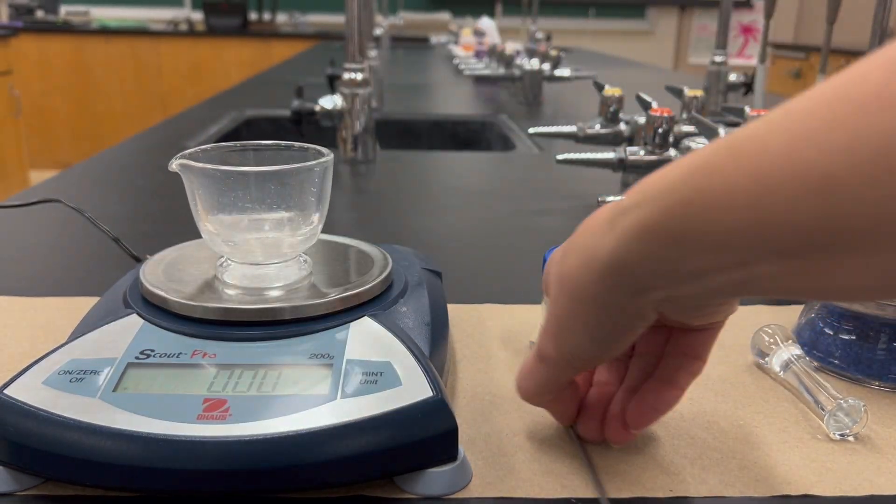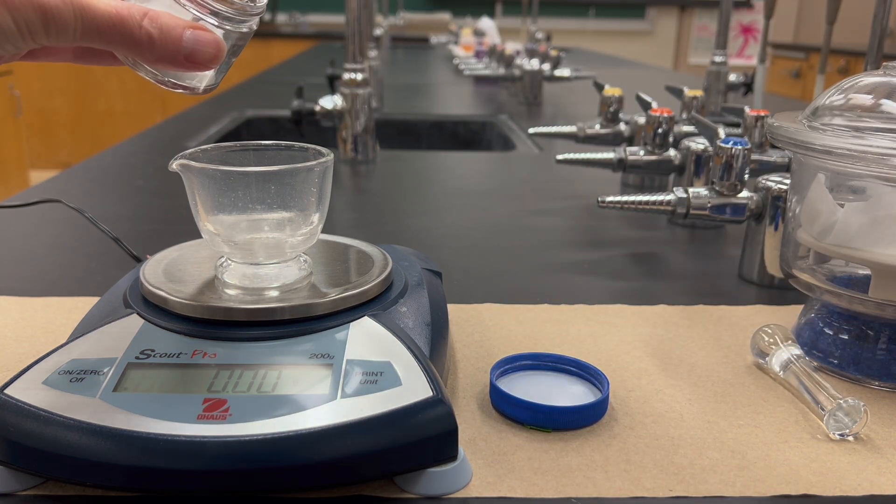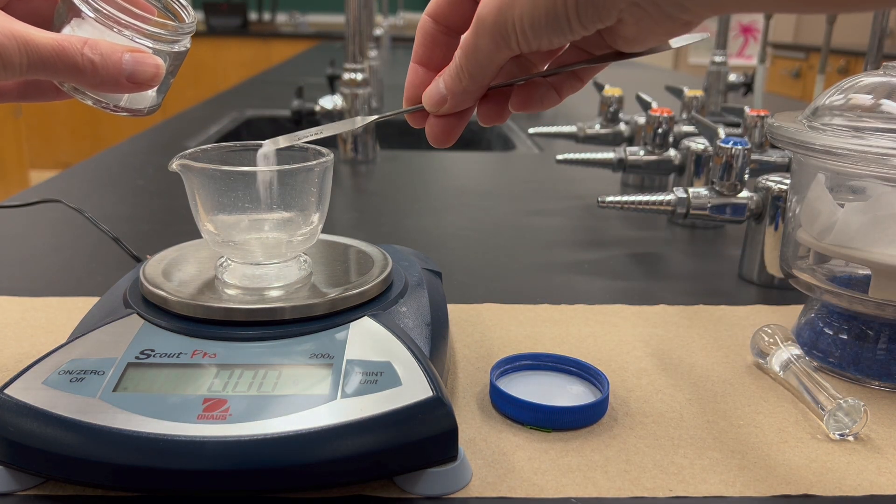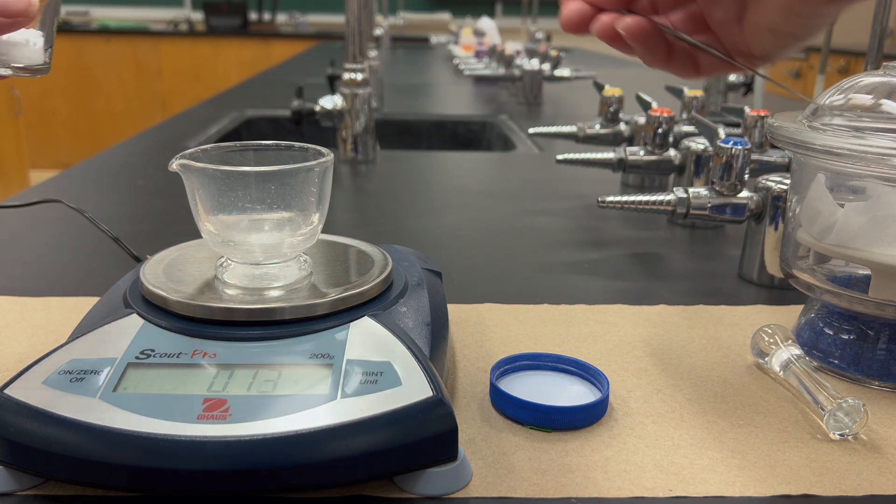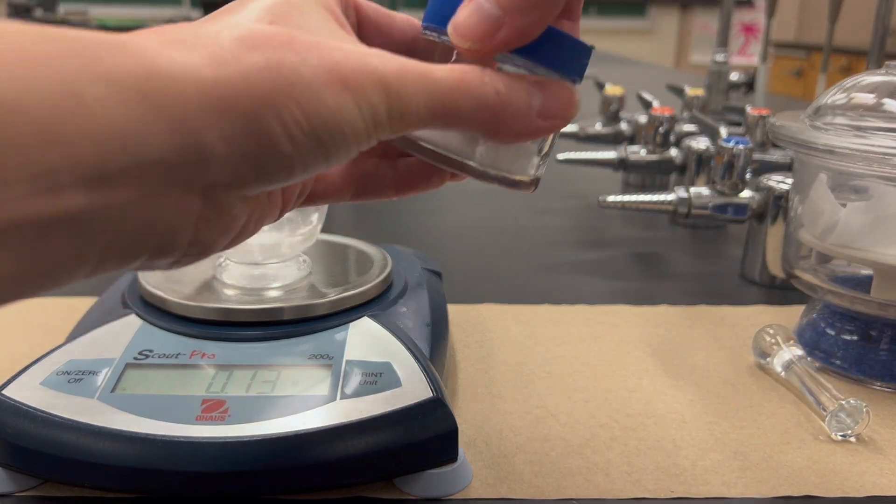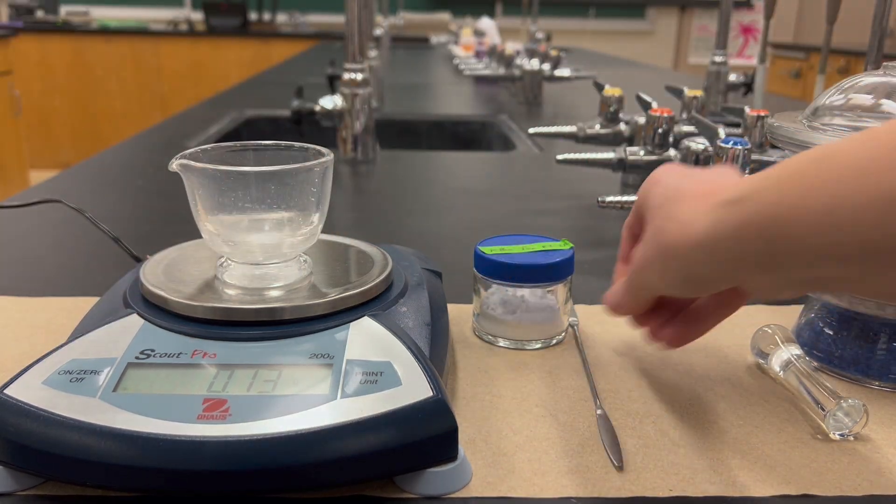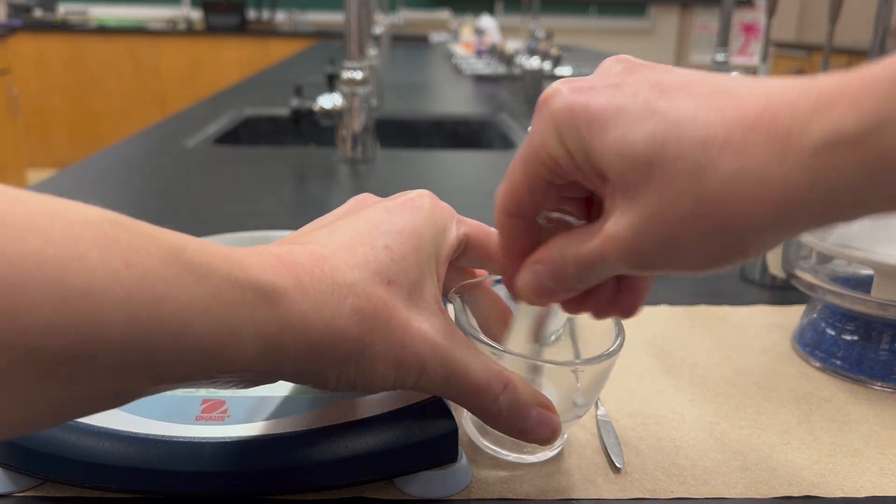This part we will measure though, so you can put that mortar onto a centigram balance and then just scoop out the KBR until it weighs somewhere between 0.1 and 0.2 grams. But again, this is not very precise, and actually if you go over, that often works kind of better, to tell the truth, so don't worry if you put too much.